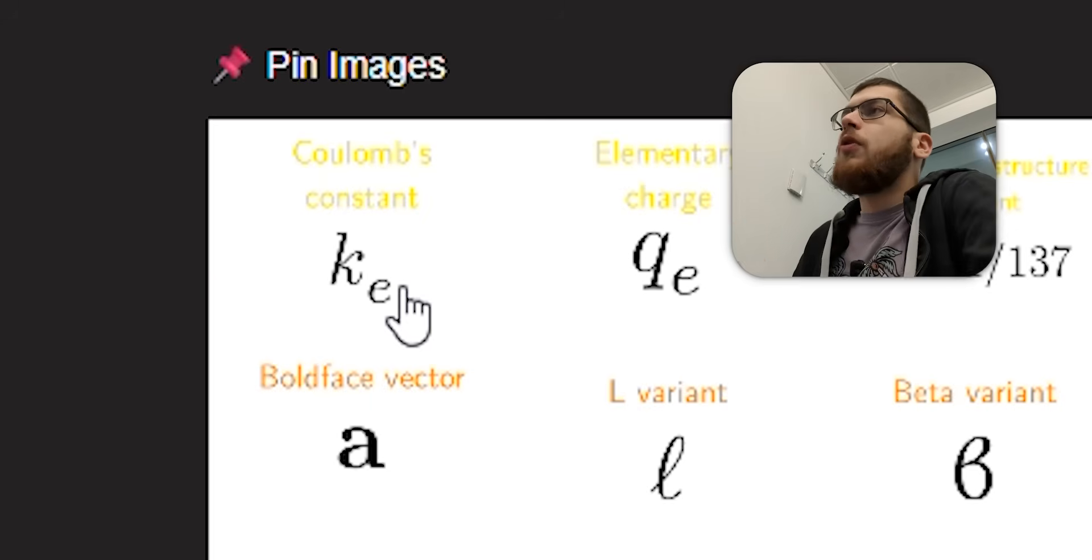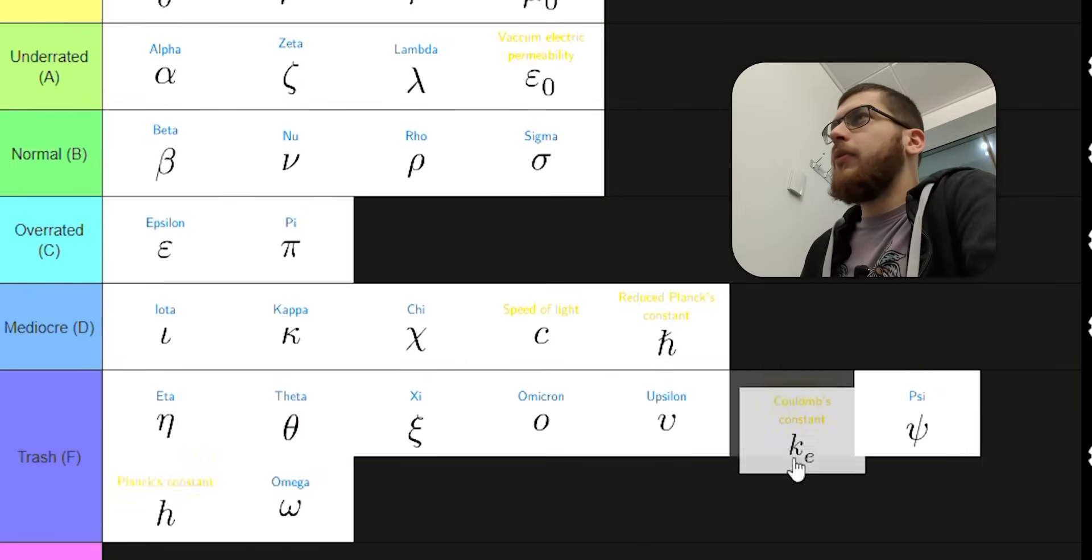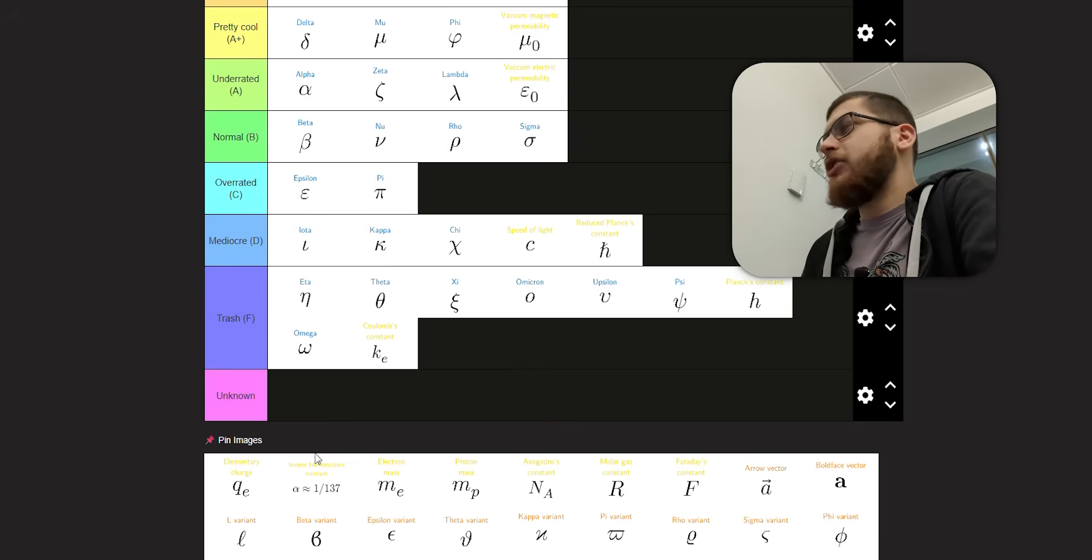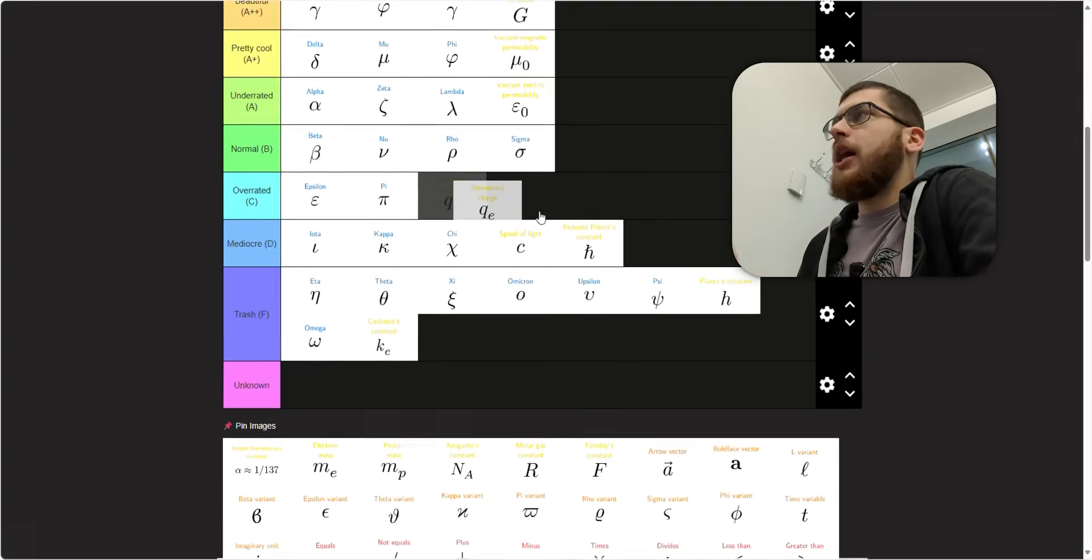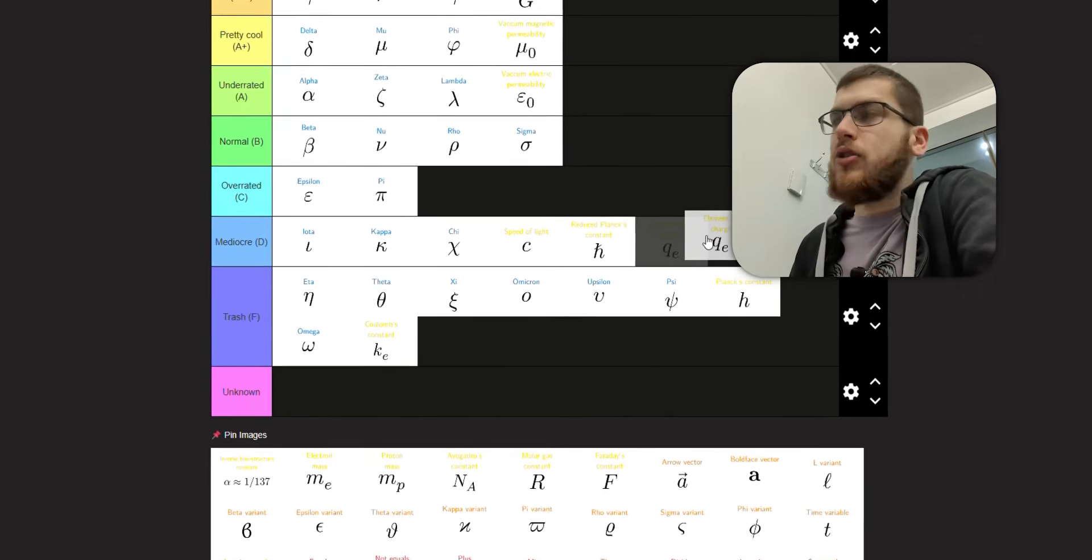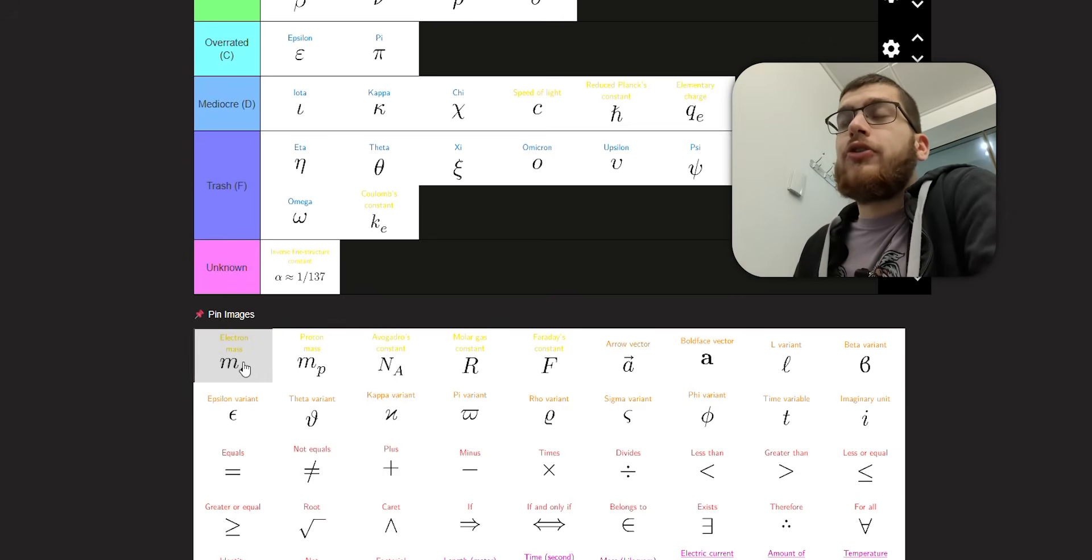Next, we've got Coulomb's constant, which is K subscript E. I think I might have seen it used a different letter before. It doesn't make sense to me why it would be K subscript E. So I will put this in trash. Elementary charge makes sense. That makes perfect sense. Charge is Q. Well, I don't know why charge is Q. Elementary is E. That's fine.